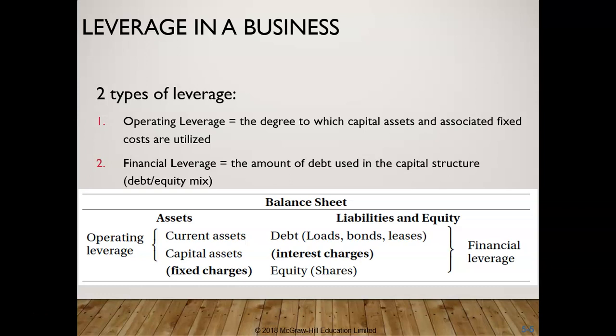There are two types of leverage. Operating leverage is the degree to which capital assets and their associated fixed costs are utilized in a business. Financial leverage is the amount of debt used in the capital structure of the business — we're always talking about the debt-equity mix. From a balance sheet perspective, operating leverage focuses on the left-hand side with capital assets, while financial leverage on the right-hand side focuses on debt, interest charges, loans, bonds, or lease payments.